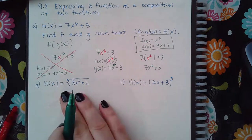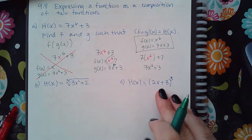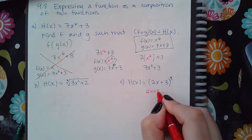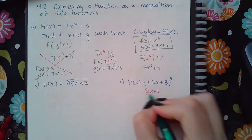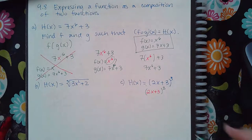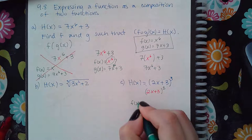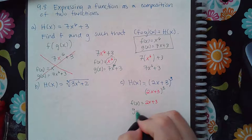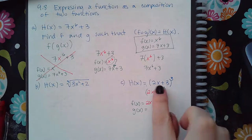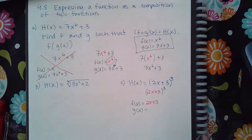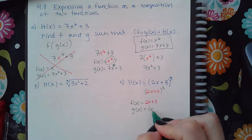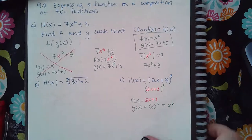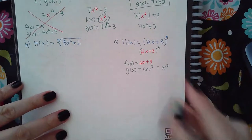The next example is a little special. It's obvious which one is the inside function because you can see 2x plus 3 inside the parentheses. So you could identify that, meaning f of x is going to be the red expression and g of x is going to be the green expression. Instead of writing the red stuff, just put an x in its place, giving you x cubed.